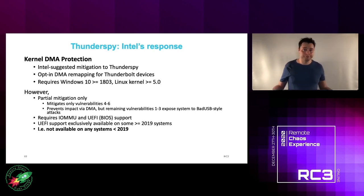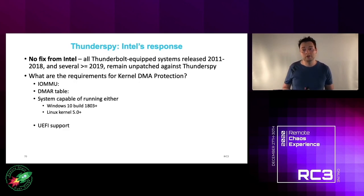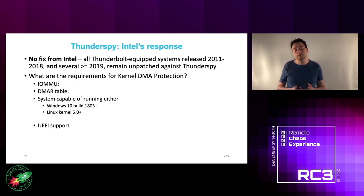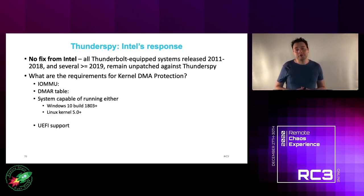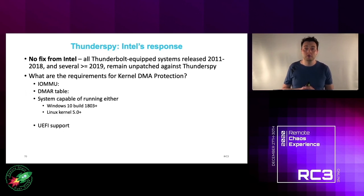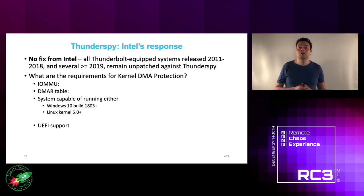So there's no real fix from Intel. Essentially what they're saying is: if you bought a laptop in the past nine years, just buy a new one. We looked at what's actually needed for a system to support kernel DMA protection: an IO MMU (present on most systems since Haswell), a DMAR table (present if the CPU has an IO MMU), a capable OS version, and UEFI support — which apparently is not present on older systems.